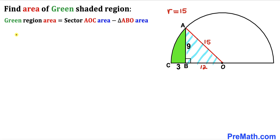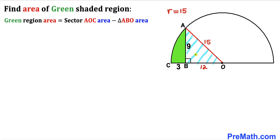Now let's observe that the area of the green shaded region equals the area of sector AOC minus the area of right triangle ABO. So our task is to calculate both of those areas.